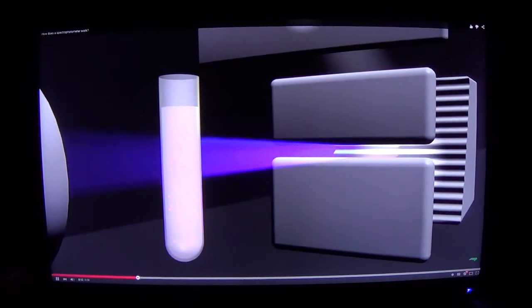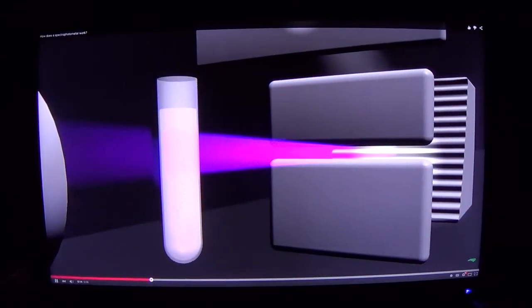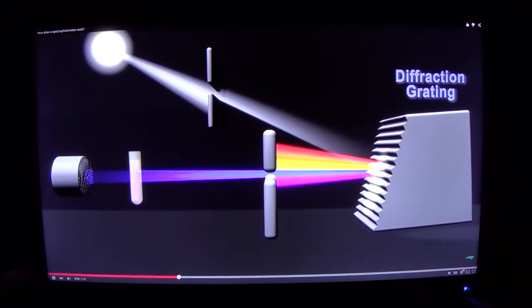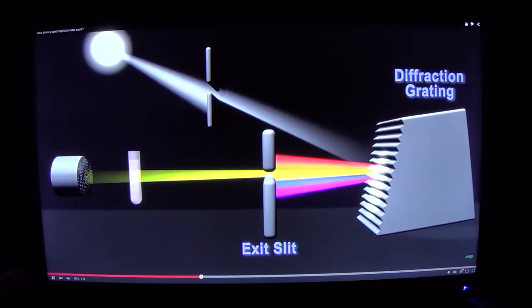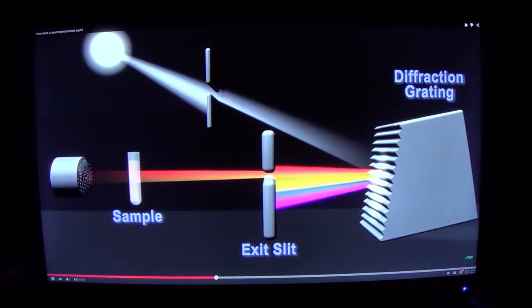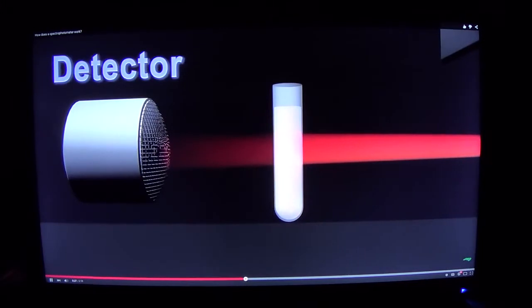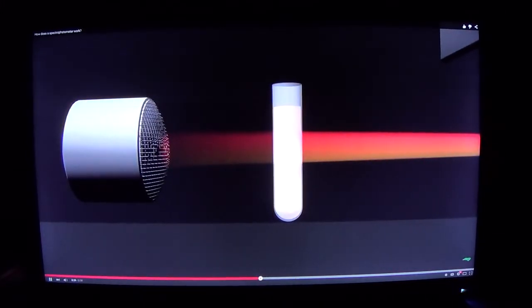It separates the light into its component wavelengths. The grating is rotated so that only a specific wavelength of light reaches the exit slit. Then the light interacts with the sample. From this point, the detector measures the transmittance and absorbance of the sample.